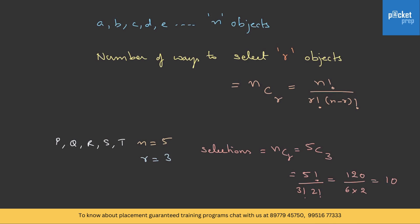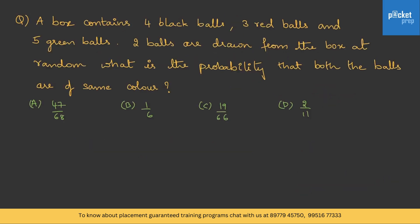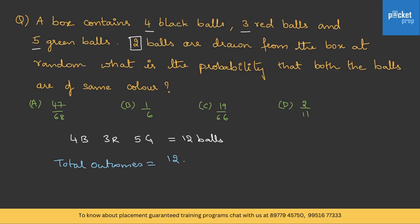This concept is required to solve probability questions. Let's take this question: a box contains 4 black balls, 3 red balls and 5 green balls. 2 balls are drawn from the box at random. What is the probability that both balls are of the same color? We have 4 black, 3 red and 5 green — total 12 balls — and we are selecting 2. The total outcomes from 12 choosing 2 is 12C2, which is 12 factorial by 2 factorial into 10 factorial, and this turns out to be 66.